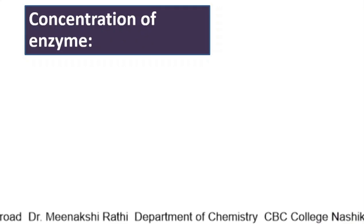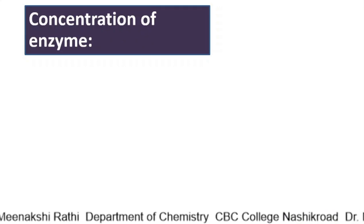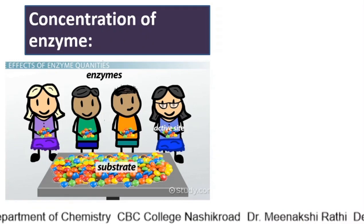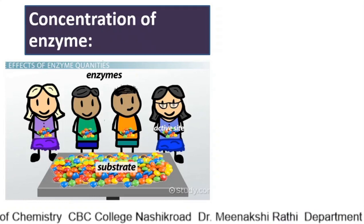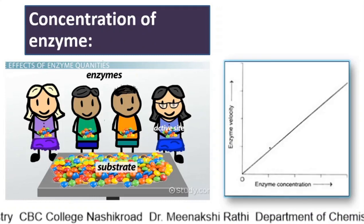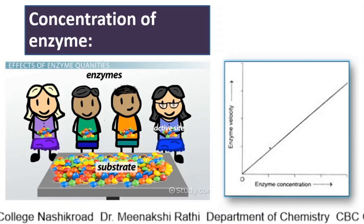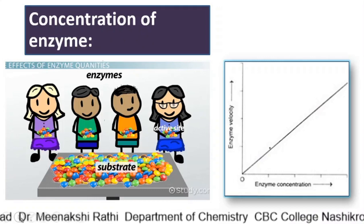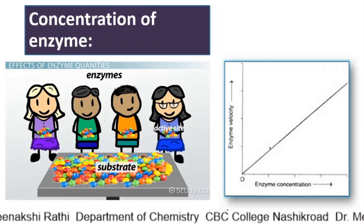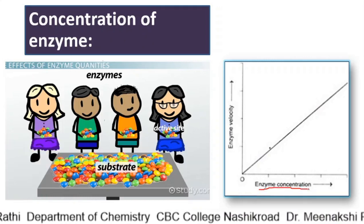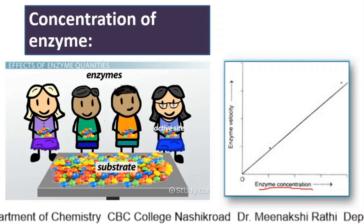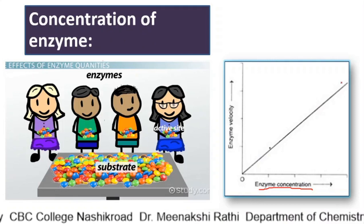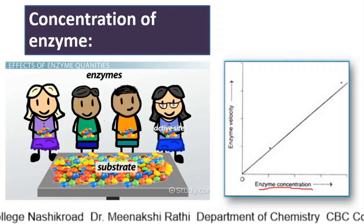The first factor we will discuss is the concentration of enzyme. It is observed that as the concentration of enzyme increases, the velocity of the reaction proportionately increases. That means enzyme concentration and enzyme velocity are directly proportional to each other. You can see in this graph that as the enzyme concentration increases, enzyme velocity also increases. Now, why does the rate of reaction increase as the concentration of enzyme increases?